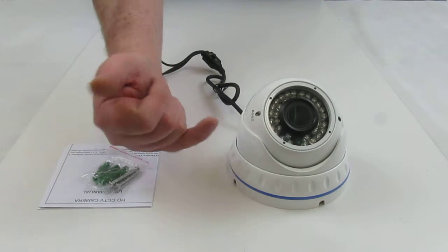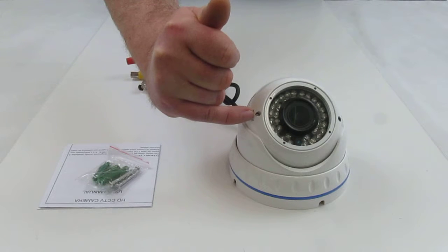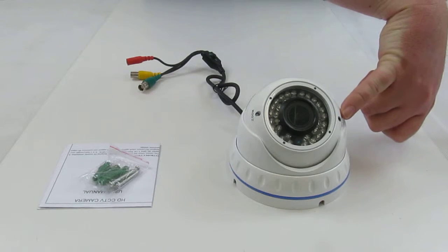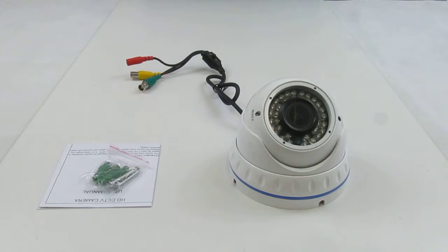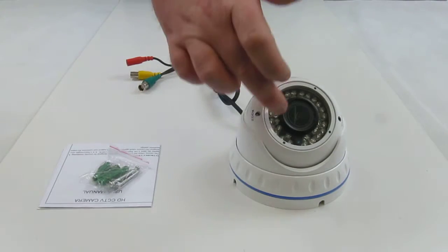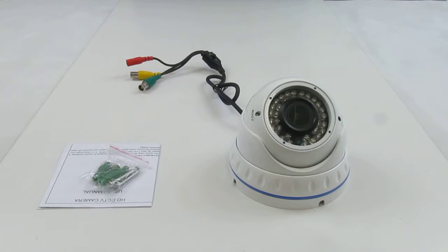The lens can be adjusted using the zoom screw here on the side of the lens, and there's also a focus screw on the opposite side. When you adjust the zoom, you can then refocus the camera. It's surrounded by infrared LEDs which provide night vision up to 30 meters in complete darkness.